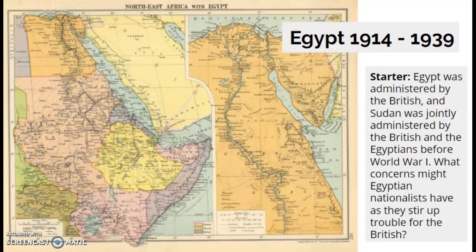This is for IB History Higher Level students studying Paper 3, North Africa and the Middle East — specifically the option on the Middle East between the wars. We're going to be looking at Egypt between 1914 and 1939. The aim of this PowerPoint is to help you write an essay about Egypt between the wars, and it assumes that you've done some reading and content knowledge already, but will set you up to write effective topic paragraphs.